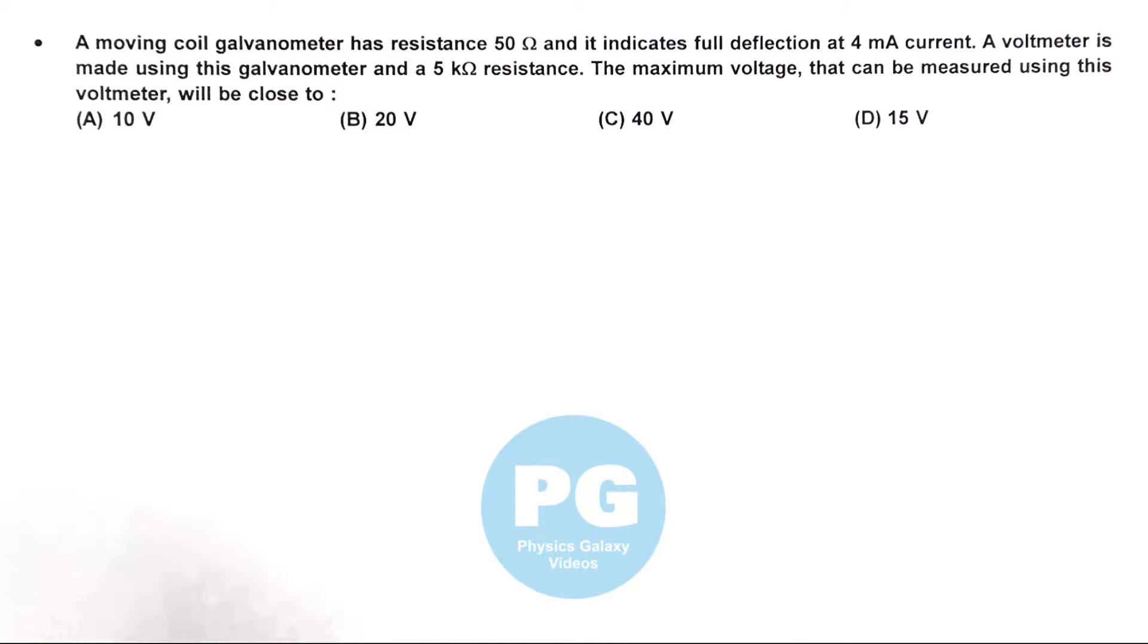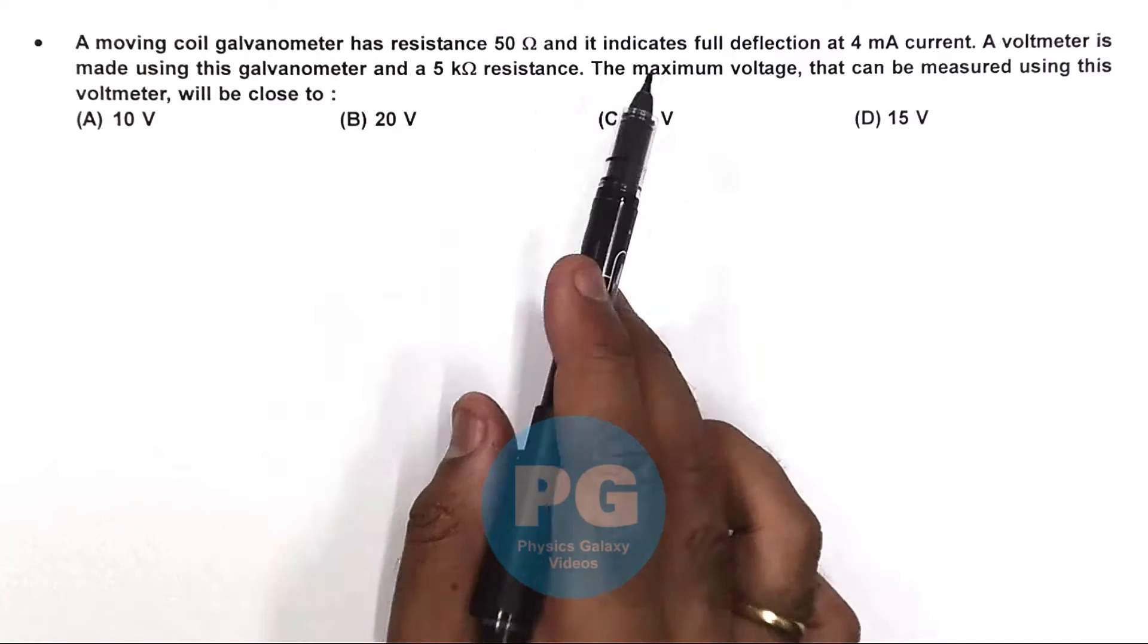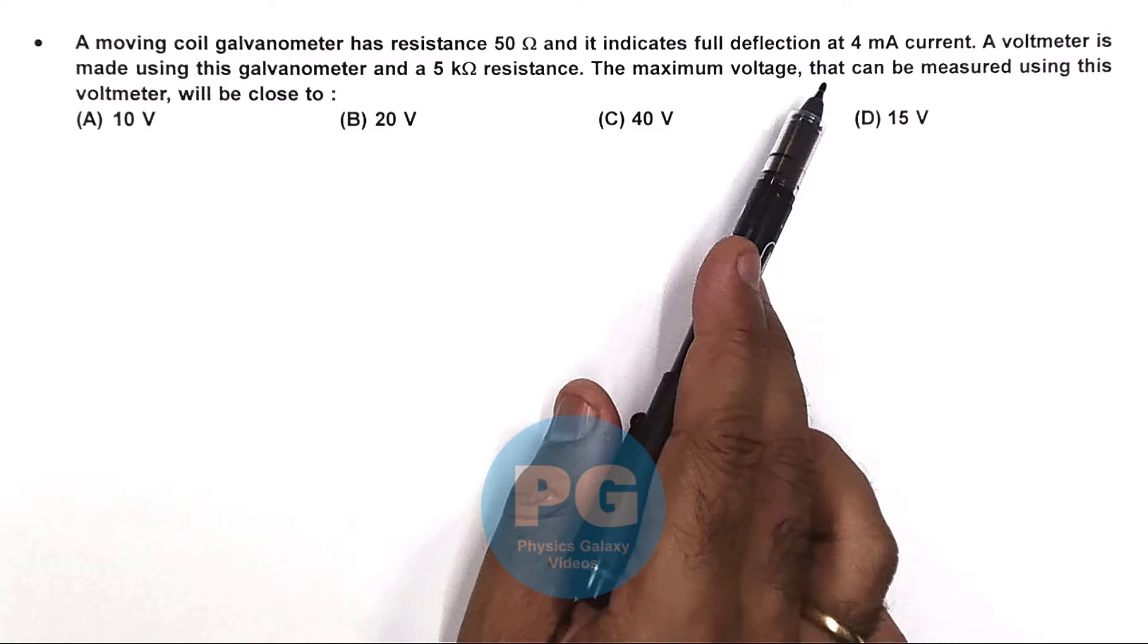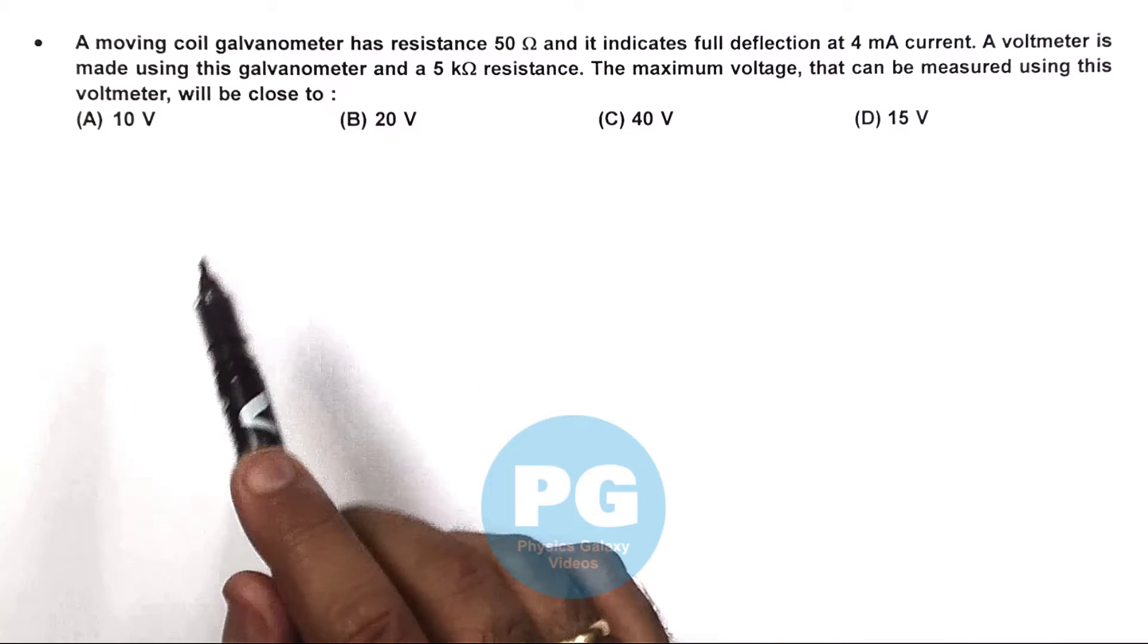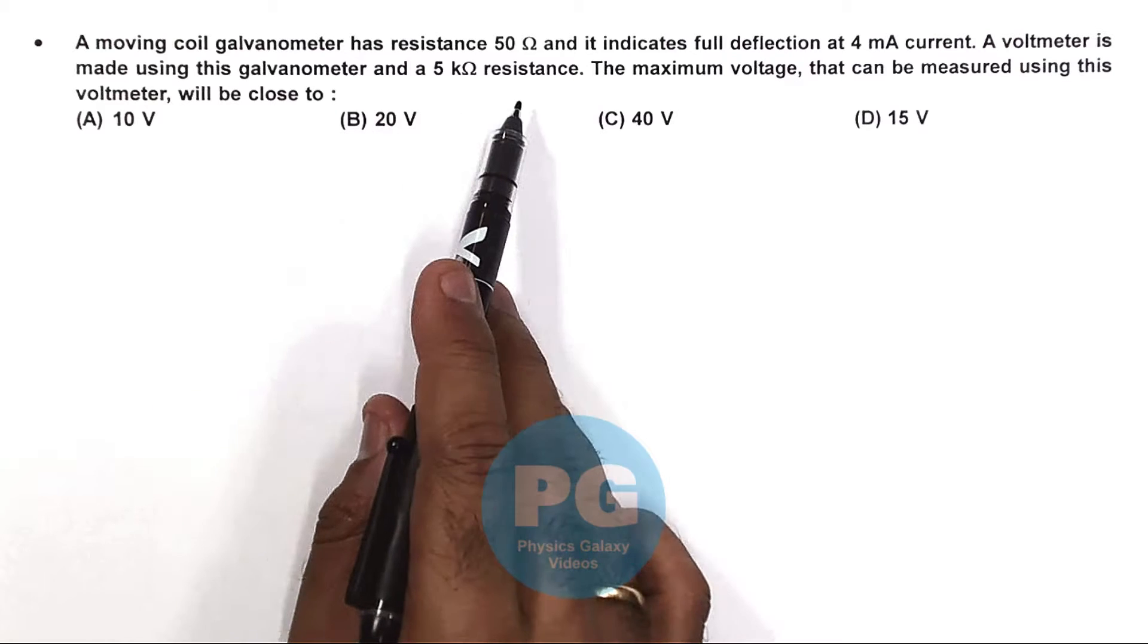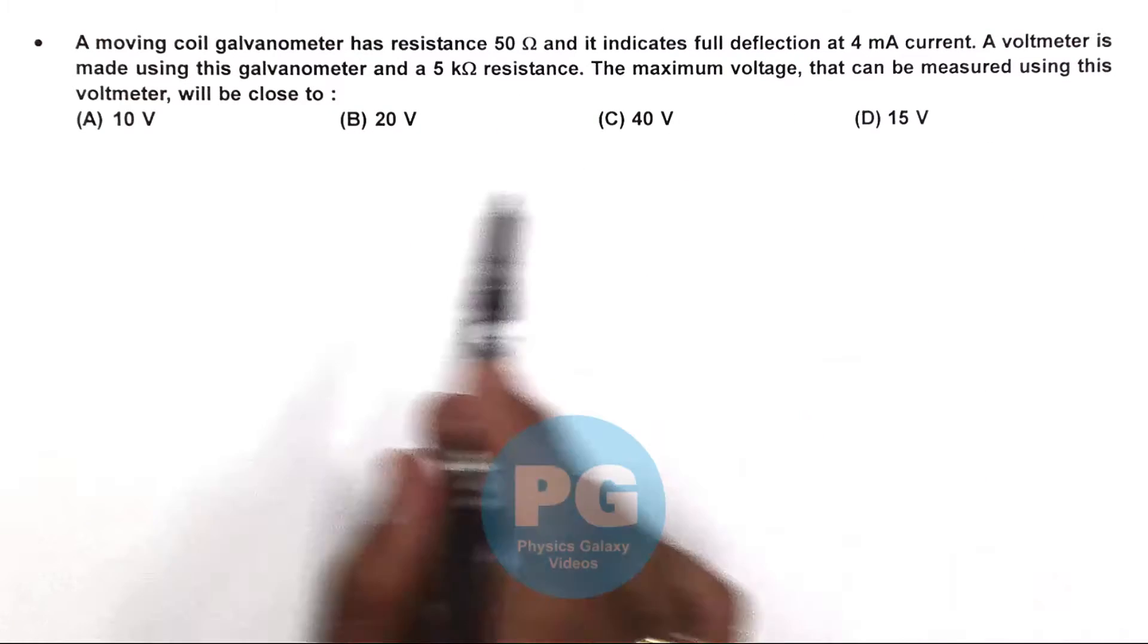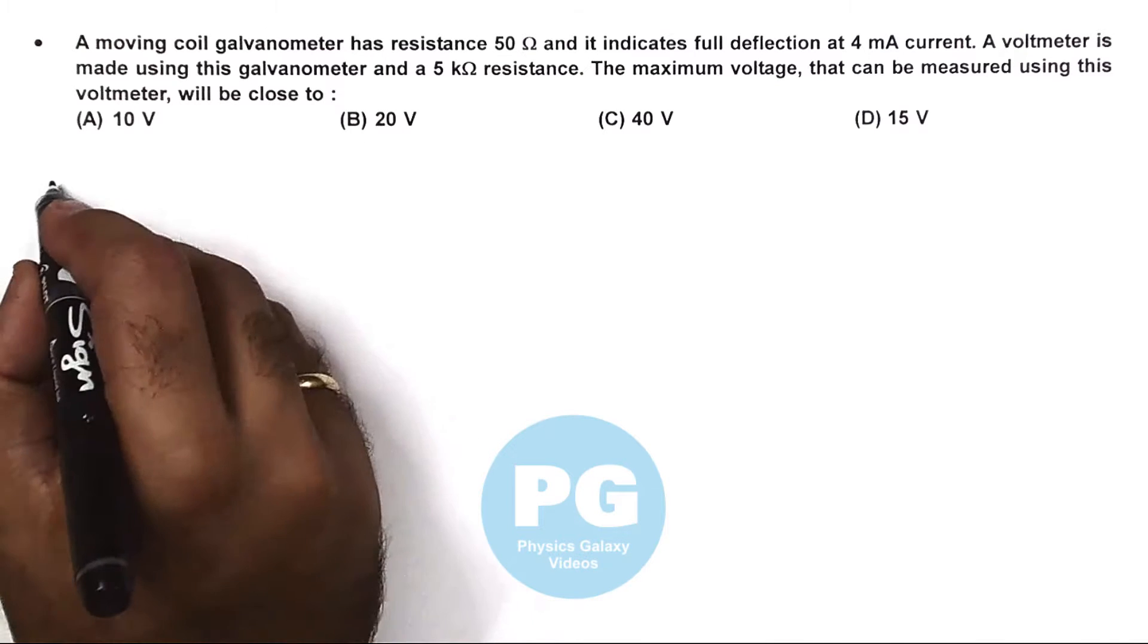In this question, a moving coil galvanometer has a resistance of 50 ohm and it indicates full deflection at 4 milliampere current. A voltmeter is made using this galvanometer and a 5 kilo ohm resistance. The maximum voltage that can be measured using this voltmeter will be close to...